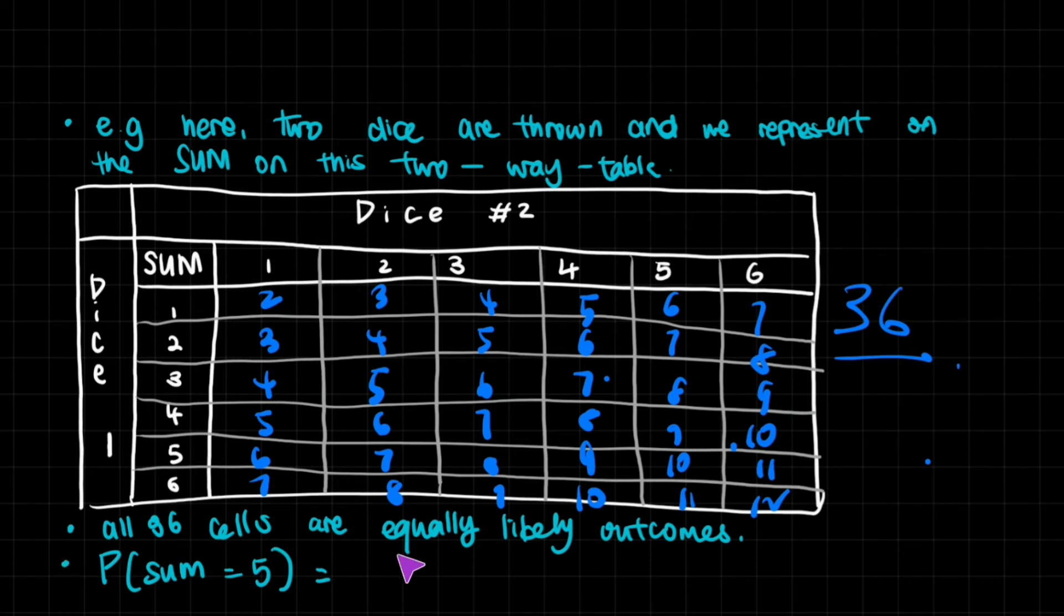Now all 36 cells are equally likely outcomes because the dice are fair. Now then we want to get the probability that the sum would be five. And we can see that there are many, many different fives. There's one five here, one five here, one five here, and one five here. That's four in total.